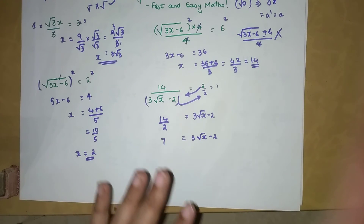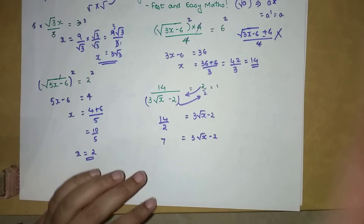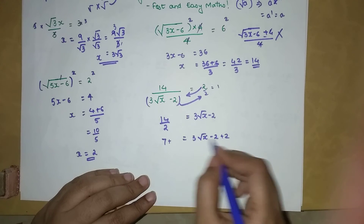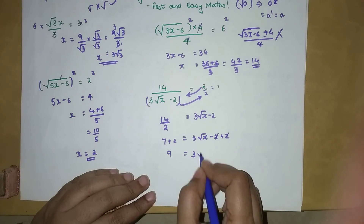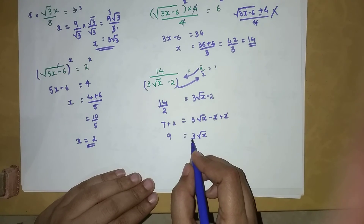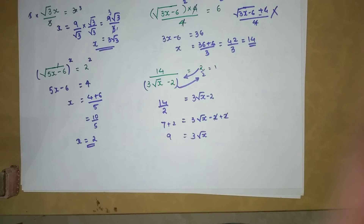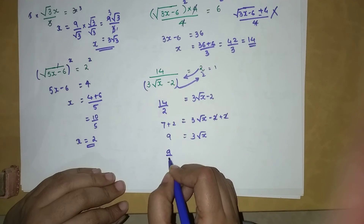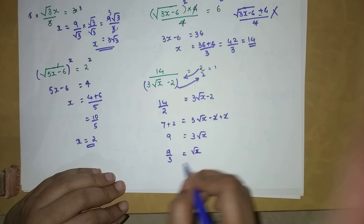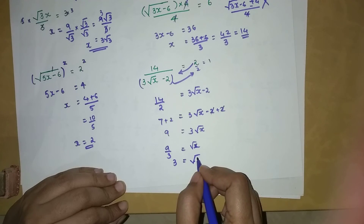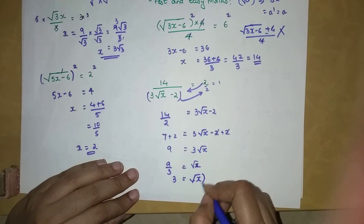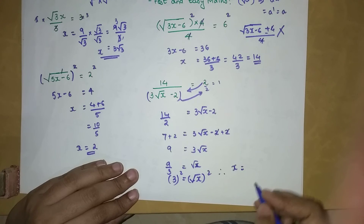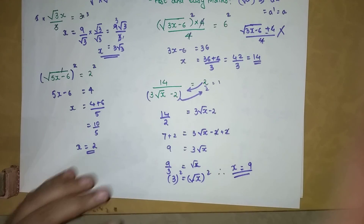Since the root covers only x and not the whole RHS, we shift the 2 by adding 2 to both sides: 9 = 3√x. Then divide both sides by 3: 3 = √x. Squaring both sides removes the root: x = 3² = 9.